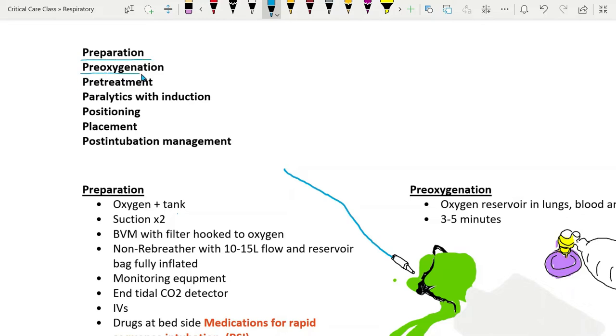Generally referred to as 7Ps: Preparation, pre-oxygenation, pre-treatment, paralytic with induction, positioning, placement, and post-intubation management.